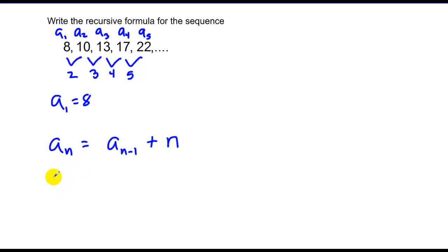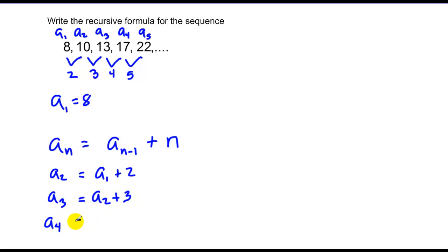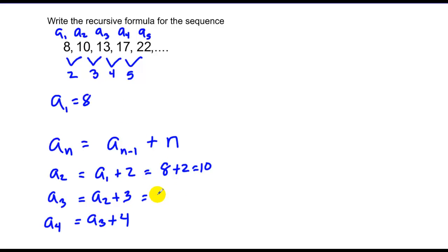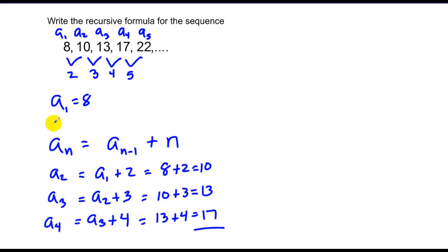Let's verify: second term is the first term plus 2, which is 8 plus 2 equals 10 — correct. Third term is the second term plus 3, which is 10 plus 3 equals 13 — correct. Fourth term is the previous term, 13, plus 4, which is 17 — correct. A lot of it is seeing the pattern, recognizing what you're plugging in, and what you're trying to get out.